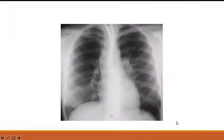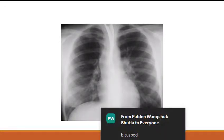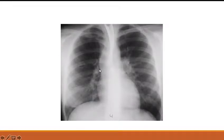This is a simple one — an adult with ejection click and systolic murmur. X-ray PA view with normal cardiothoracic ratio and normal pulmonary vasculature, chambers not dilated, but the ascending aorta is dilated. Given the history of ejection click and dilated ascending aorta, this is probably bicuspid aortic valve with aortic stenosis and post-stenotic dilatation.